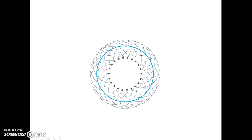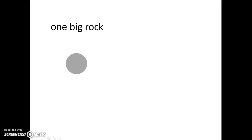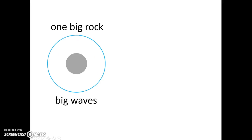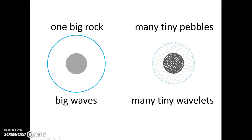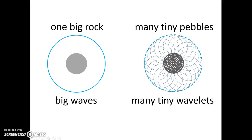Now these little wavelets will spread out, and you could draw in the new combined shape in light blue. And they spread out again, and they spread out again. So what have we learned? You can take a big rock and imagine the big waves that it generates. Or if you'd like, you can take many tiny pebbles and imagine the many tiny wavelets that they produce, which spread out. In fact, these two pictures are equivalent. The pebbles have to be really small, and they have to form the shape of the one big rock.